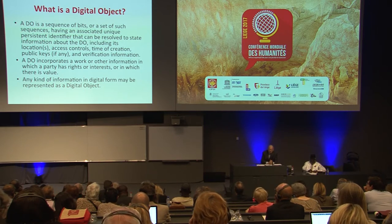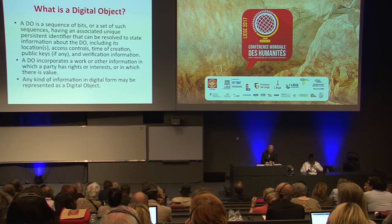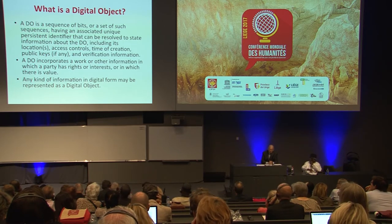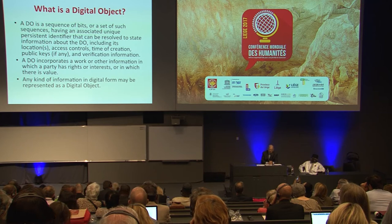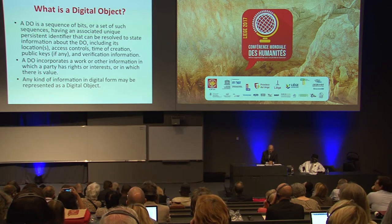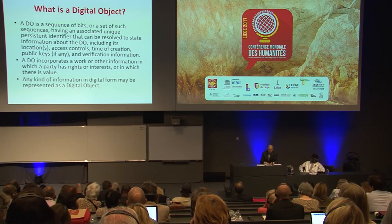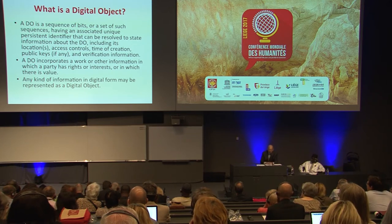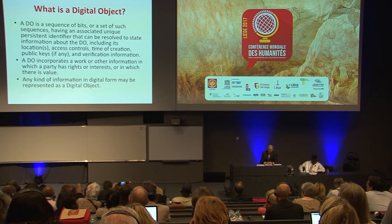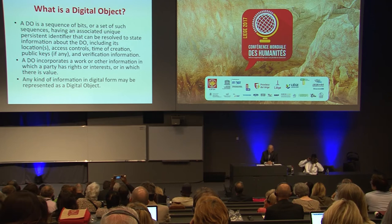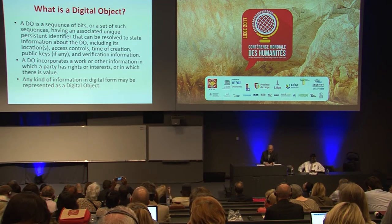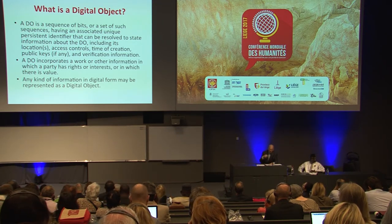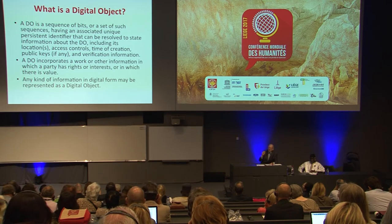Formally, a digital object is a sequence of bits, or a set of bit sequences, that incorporates a work or portions of a work or other information in which a party has rights or interests, or in which there is value. So this could be contracts, copyright material, or digital cash. These digital objects also have an associated unique persistent identifier that is resolvable to useful information about that object — starting with the identifier, you're able to use it, perhaps by clicking on it or some other process, to obtain this useful information.